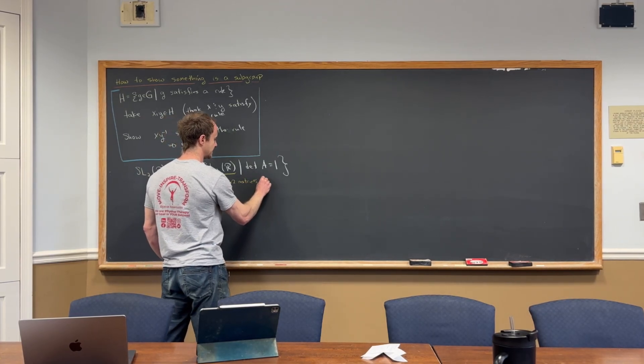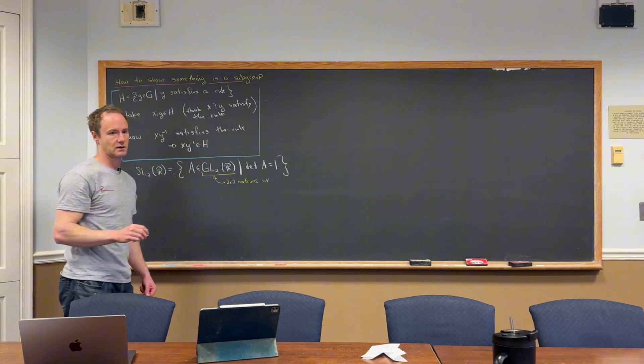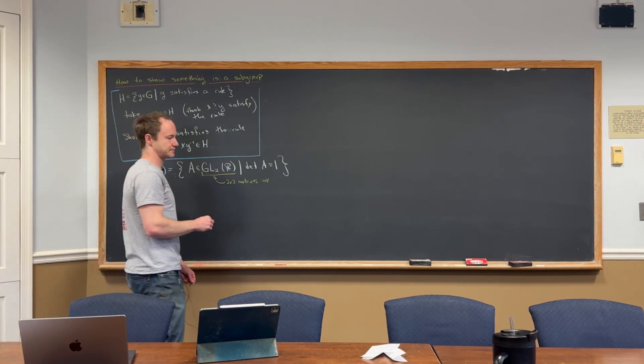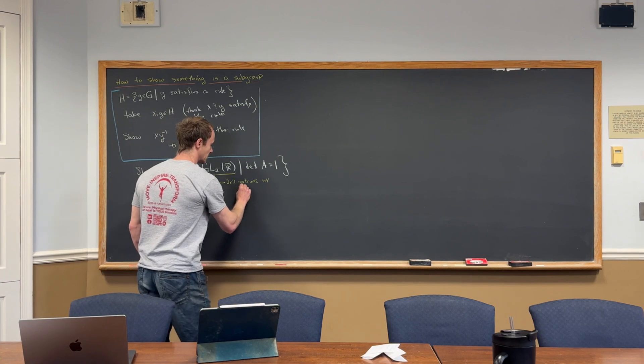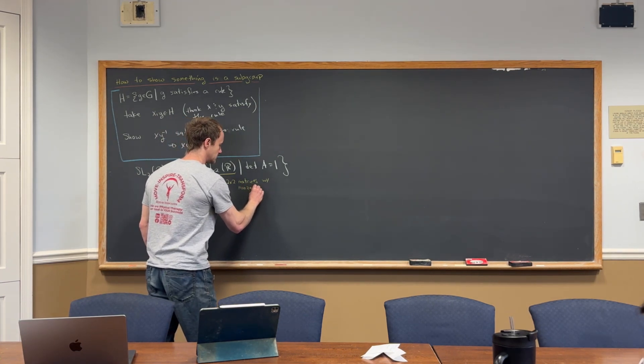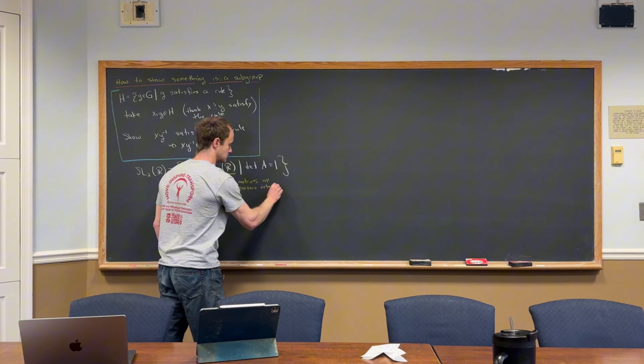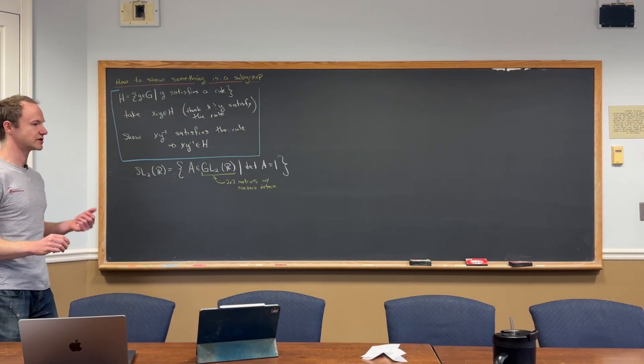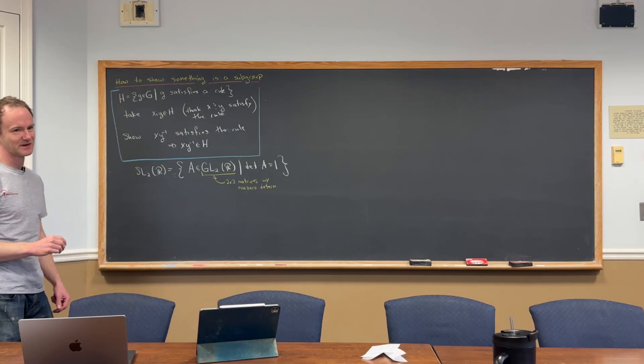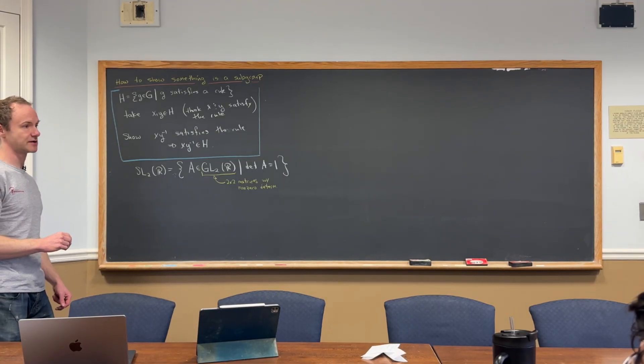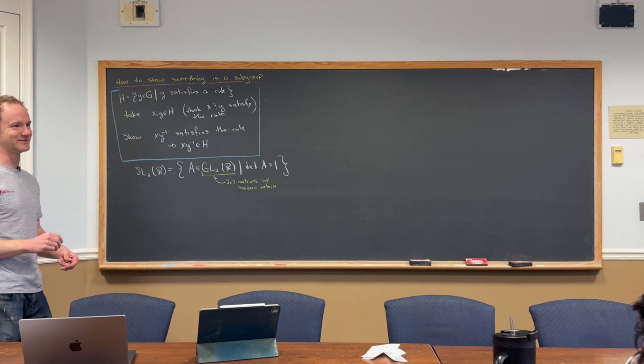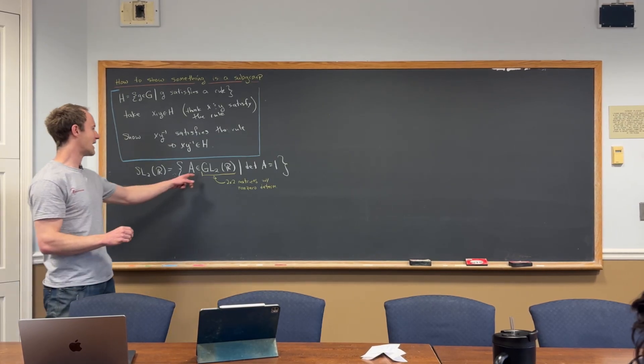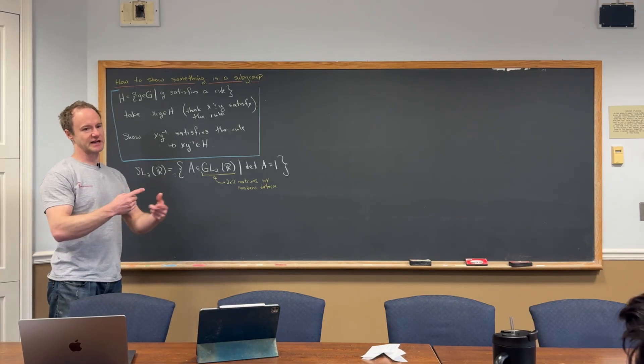So these are two by two matrices with, well, this is the Lie group for the Lie algebra, so with non-zero determinant. Okay, so that's what GL(2,R) is—non-zero determinant. But by the invertible matrix theorem, what does non-zero determinant mean? By the invertible matrix theorem, it has an inverse. And so that makes this a group under matrix multiplication.